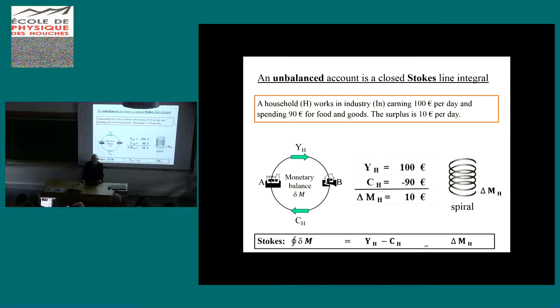Imagine industry pays 100 euros to the households and receives only 90 back from consumption costs. The next day industry must borrow 10 euros from the bank to pay again 100 euros. That cannot be true. This account is actually a Stokes integral. Industry pays the income of 100, households pay consumption costs, and they are not equal. So this is a Stokes integral. The balance is not a ring, it's a spiral. The spiral goes up by 10 euros every day, and if they mismanage, it goes down into deficit. An unbalanced account is always an example of Stokes line integral.